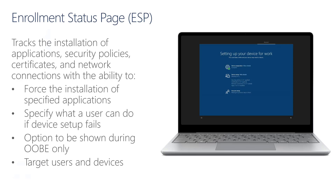For example, to ensure content filtering software or language packs are installed. ESP can be configured to track and install applications and policies with every user that signs into their devices, or it can be restricted to only be shown during the out-of-box experience. It can also specify what actions users can perform in the event that the device setup failed. ESP has two main evaluation phases, one for the device and one for the user.